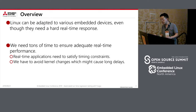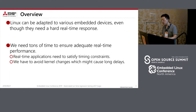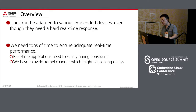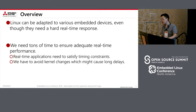Here is an overview of this session. Recently, Linux can be adapted to various embedded devices such as television, navigation systems, mobile home, and industrial controllers. Especially industrial controllers need real-time response — in other words, predictable latency. We need to ensure real-time performance because real-time applications need to satisfy timing constraints, and they should avoid kernel changes which might cause long delays.